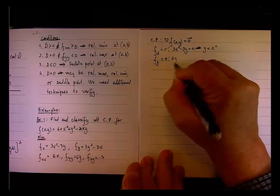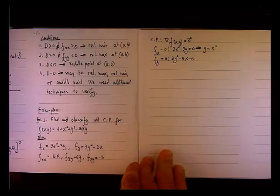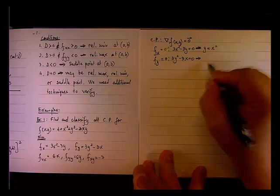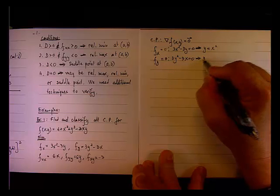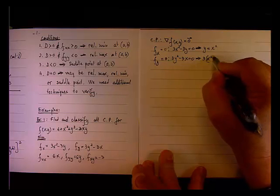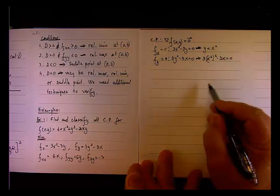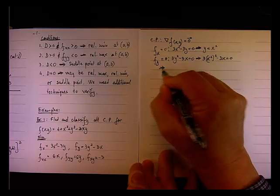And the partial derivative with respect to y equals 0. Well, this required that 3y² - 3x equals 0. But y is x².